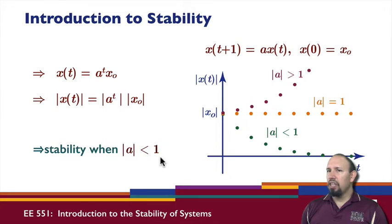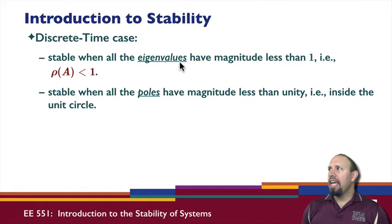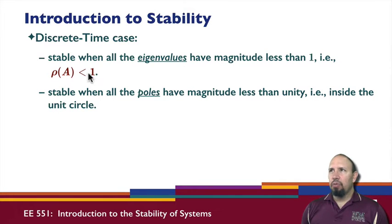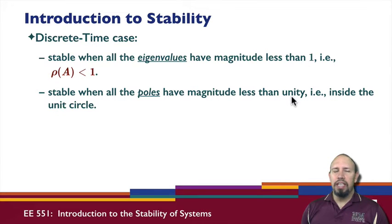Stability is what we have when the magnitude of a is less than one. In the discrete-time case, a system is stable when all the eigenvalues of matrix A have magnitude less than one. Another way of saying that is the spectral radius of A is less than one — the spectral radius being the largest magnitude among all the eigenvalues. Similarly, for a transfer function, the system is stable when all the poles have magnitude less than one, that is, inside the unit circle.